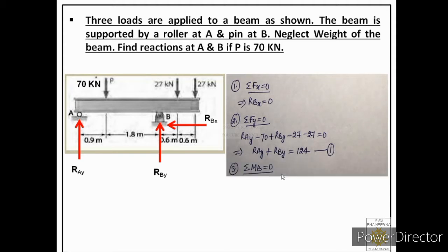Now we apply the third equation: the moment of all forces about any particular point must equal zero. We should choose the moment center where maximum forces act to simplify the equation. Let us take B as the moment center. The moments generated by RBX and RBY about point B will be zero because their perpendicular distance from the moment center is zero, so we will ignore those two.